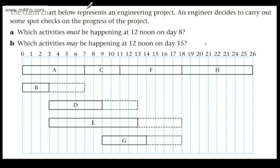In the question, it says the Gantt chart below represents an engineering project. An engineer decides to carry out some spot checks on the progress of the project. In part A, we're asked which activities must be happening at 12 noon on day 8. And in part B, which activities may be happening at 12 noon on day 15.